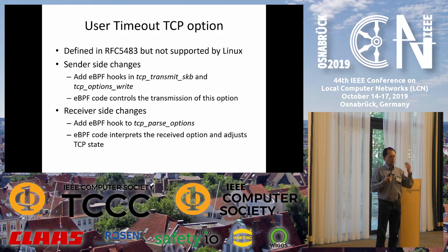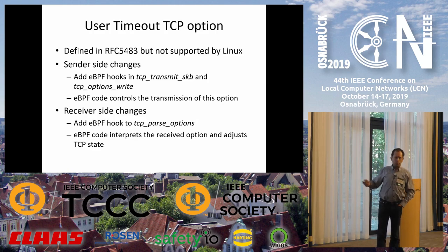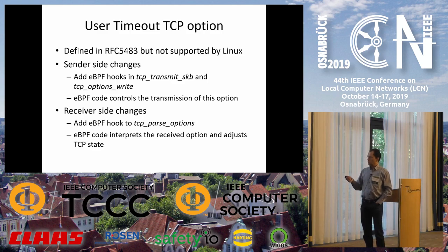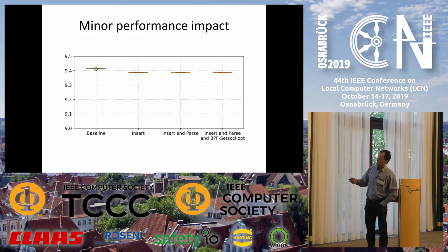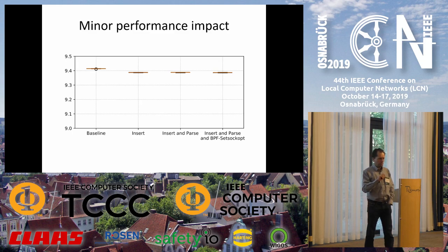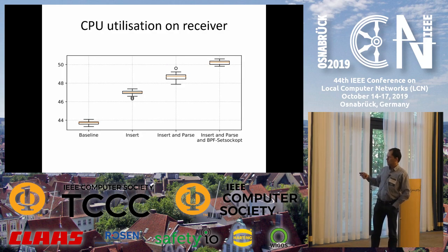We just need to change TCP transmit SKB, TCP option write, and do small changes to the receiver. What is the performance impact of implementing this TCP option using eBPF? On a 10 Gbps interface, the baseline is a bit more than 9.4 Gbps. When you insert, parse, or modify an option, you go slightly below 9.4 Gbps, so the performance impact is very low. There is some more CPU utilization, but not that much. So there is some cost, but not much.